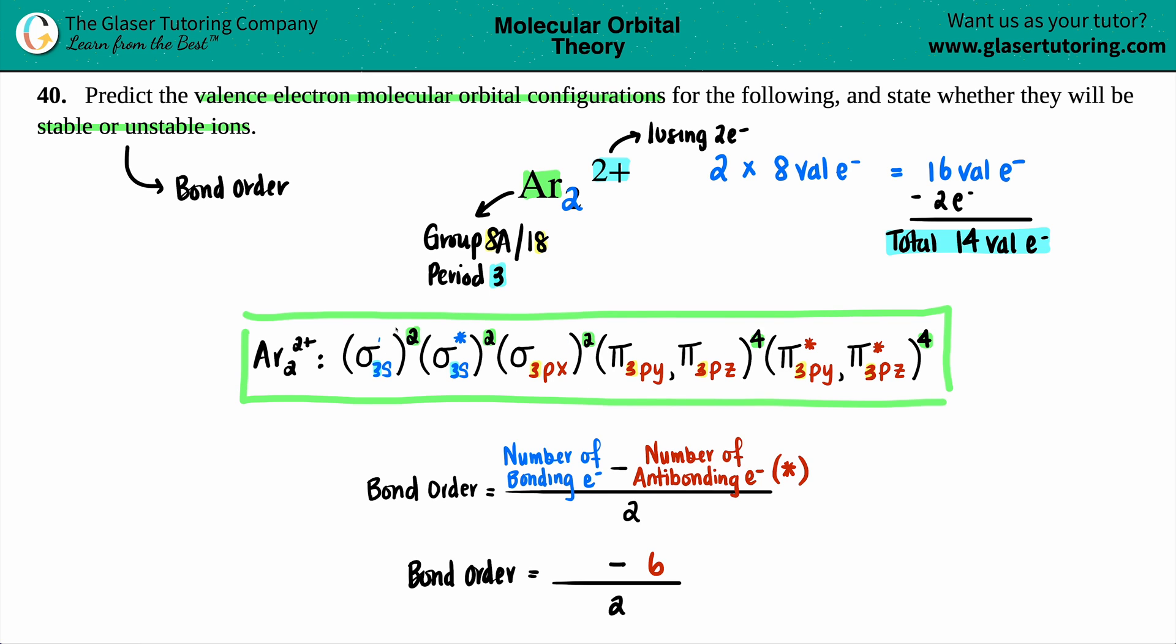Now comes the bonding. It's all the ones that do not have the star in the upper right hand corner. We got two electrons plus another two, that's four, four plus four is eight, so I have eight bonding electrons. To find the bond order we're going to subtract, so eight minus six is two, two divided by two is one, and that is the bond order.